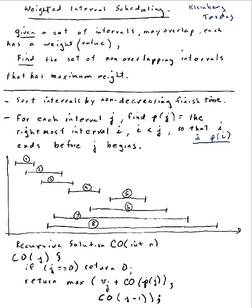Let me write down the P values for all intervals sorted one through eight. There is no interval that ends before one begins, so P(1) = 0. Similarly P(2) = 0. For three, interval one ends before three begins, so P(3) = 1. For four, P(4) = 2. For five, P(5) = 4. For six, P(6) = 3. For seven, P(7) = 1. For eight, P(8) = 1.